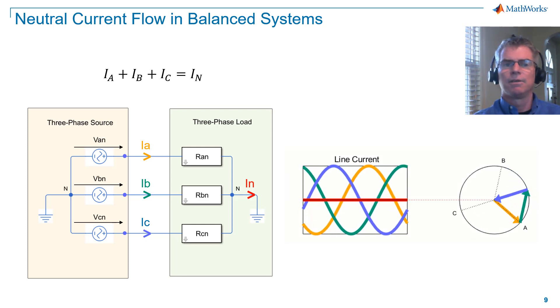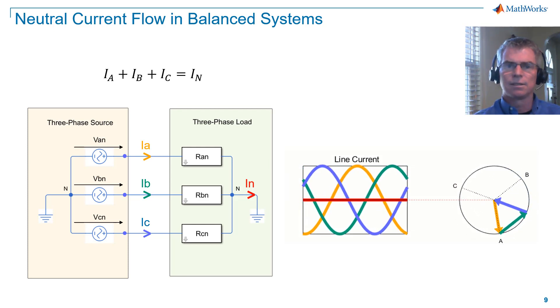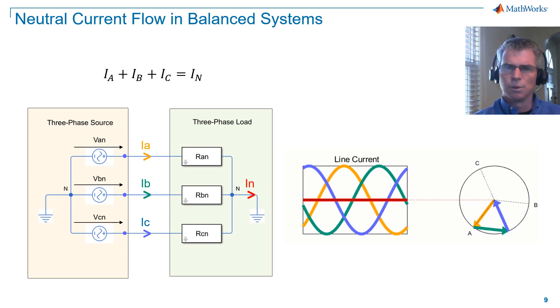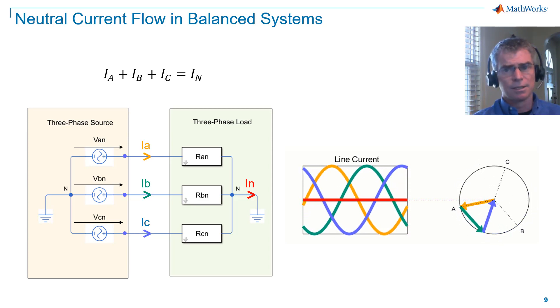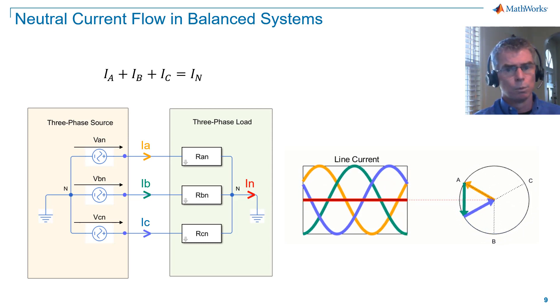Here's a visualization of the vector sum of the line currents. You can see they add to zero, and so in a balanced system, no neutral current will flow.